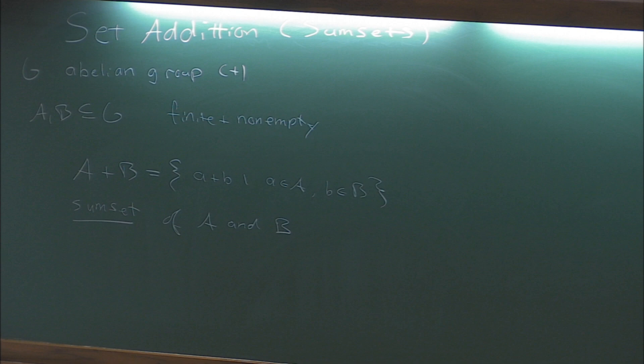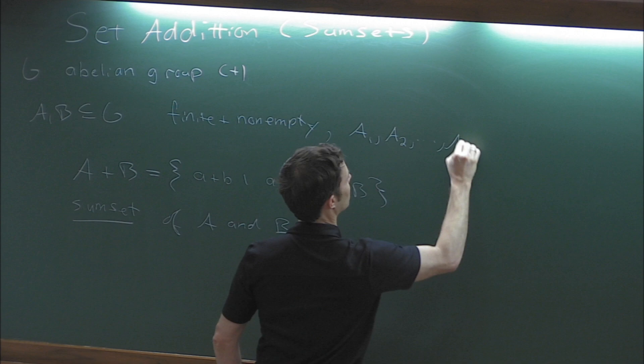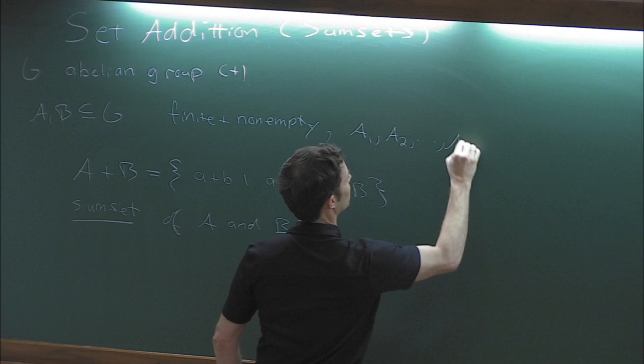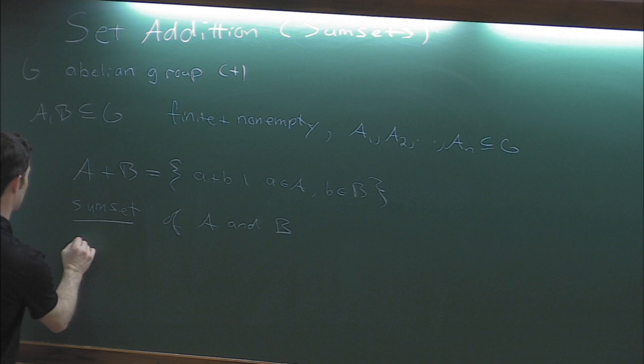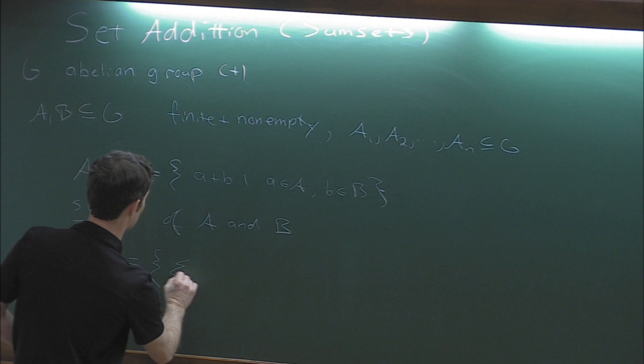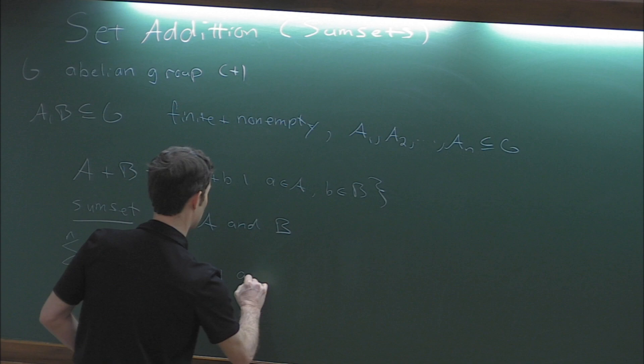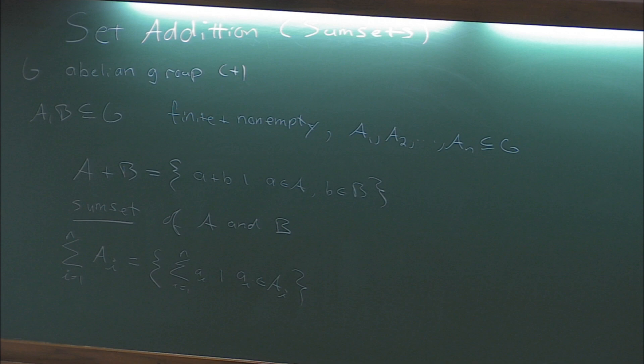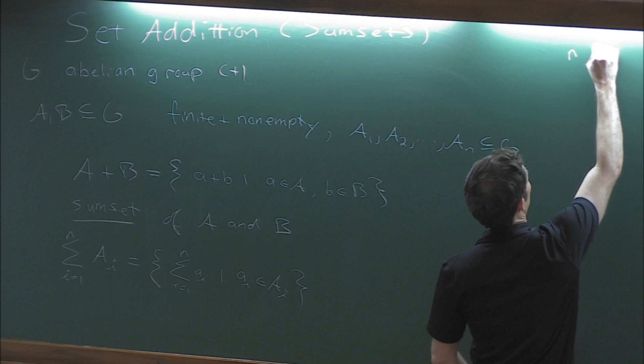We can add more than two summands. If we have A₁, A₂ up to Aₙ inside G, we can define the n-fold sumset - the sum from i equals 1 to n of all the Aᵢs - just by taking elements from each individual summand. We might use the abbreviation nA for the sumset of A with itself n times.